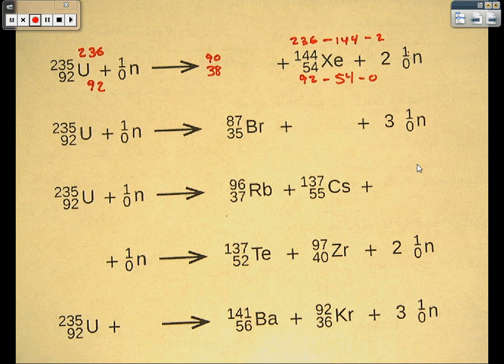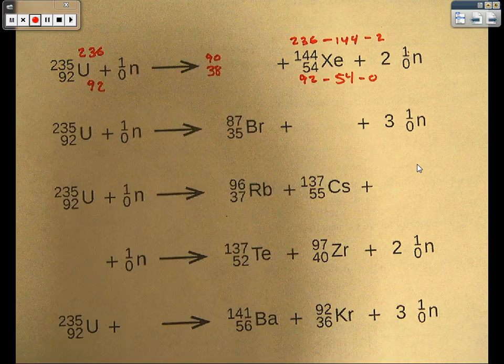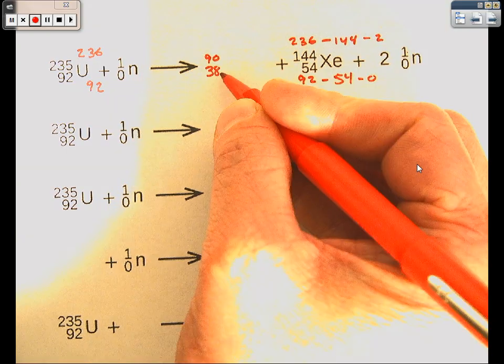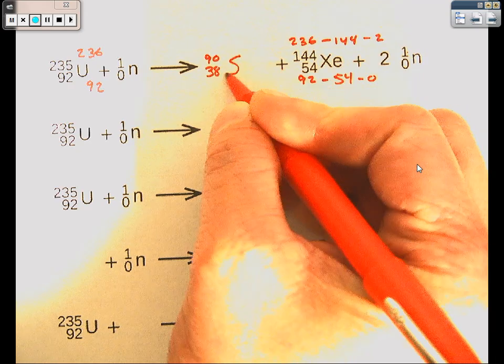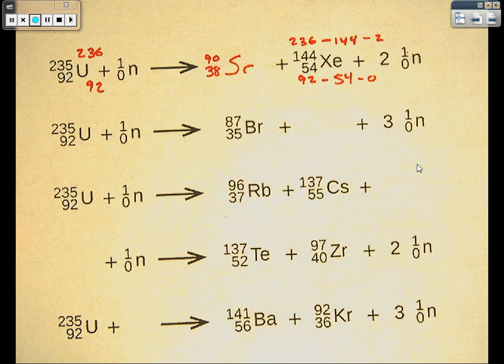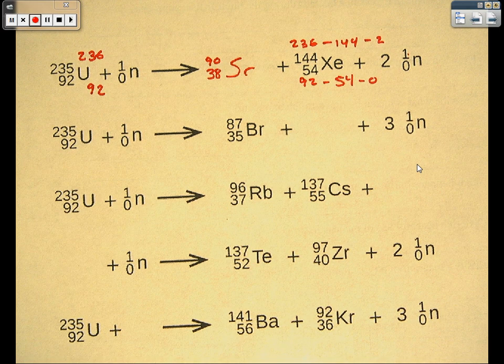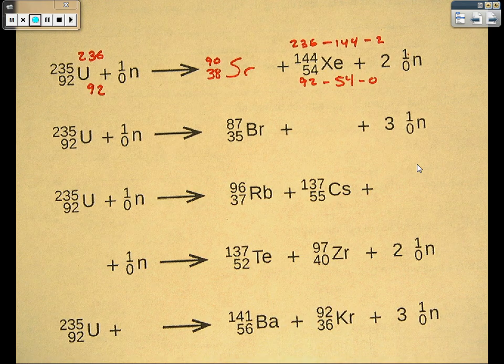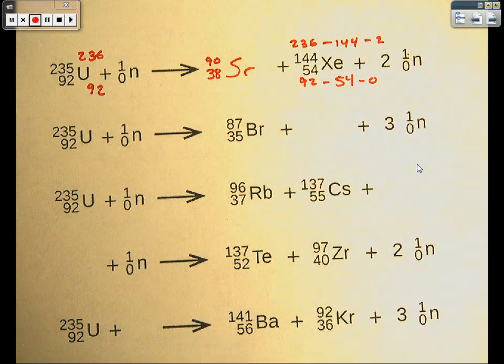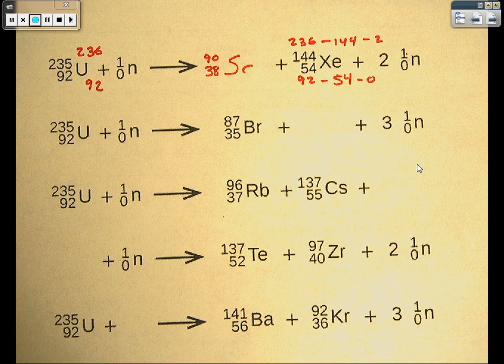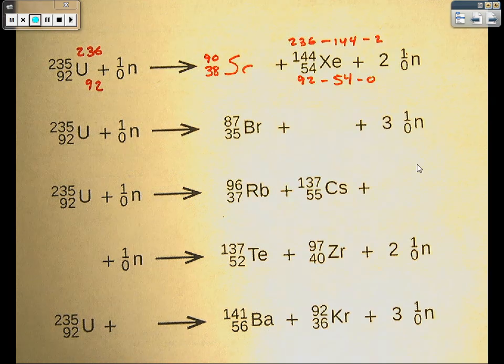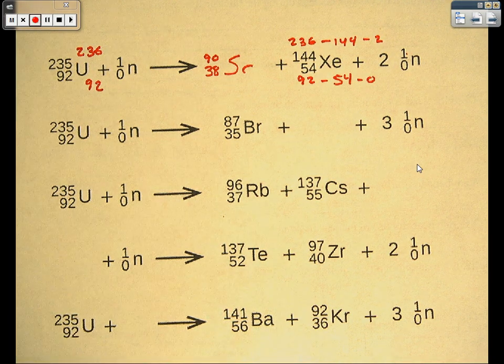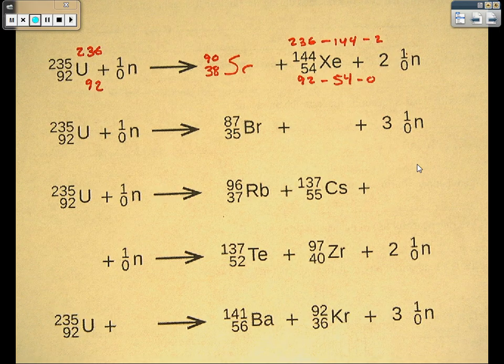As always, we look up the symbol based on the atomic number. We look up the symbol based on the 38. Number 38 on the periodic table is strontium, Sr. We're going to do this similar kind of process with every kind of problem. We're going to look at what the total mass is on the complete side, subtract out what we have on the incomplete side, to find the missing part.